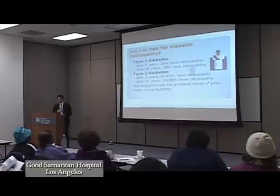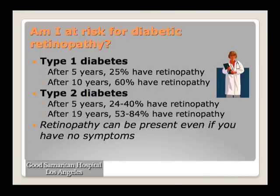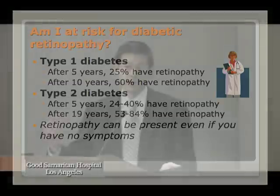If you've been diagnosed with diabetes, are you at risk? In Type 1 diabetes, after about five years 25% of people will have retinopathy — they may not notice it. After 10 years, up to 60% can have retinopathy. In Type 2 diabetes, after five years 24 to 40% can have retinopathy, and after 19 years anywhere from 50 to 84% can have it. Retinopathy can be present even without symptoms — it may not have severely affected central vision yet, but it could be progressing.